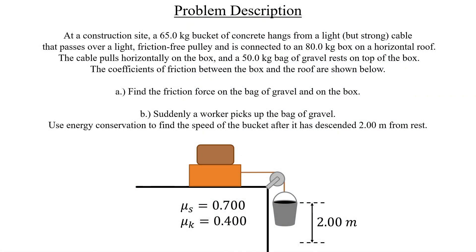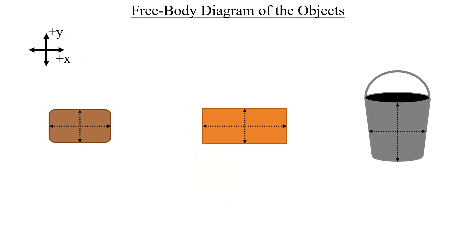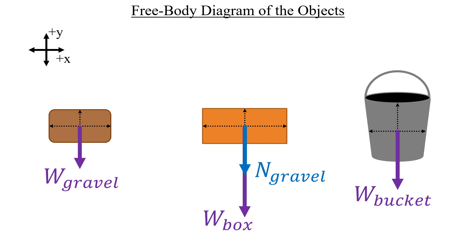The first thing on our to-do list is to create a free body diagram of these objects. Each one will experience the force of their own weight pointing straight downwards. The box, however, will experience an additional downward force in Part A due to the bag of gravel resting on top of it. We'll call that the normal force due to the gravel, like this. There are also normal forces that point in the plus-y direction too. One comes from the box supporting the gravel, and another from the roof of the building supporting the two objects that are stacked on top of one another.